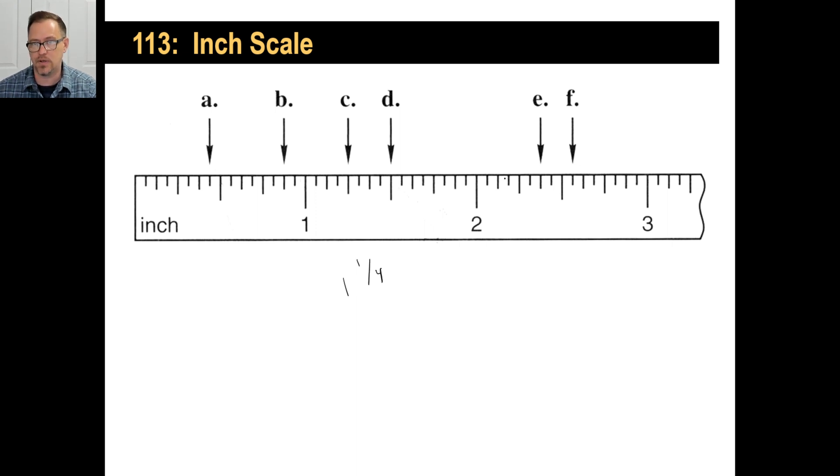Okay. E is going to be two. And this is on the eighth indicator here. So they'll have one, two, three. So that's two and three eighths. F is right there on one of those sixteenths. So you can't really break that up. But what you can do is you can go, okay, well, that's two and a half right there. That's two and eight sixteenths. So just one more would be two and nine sixteenths.